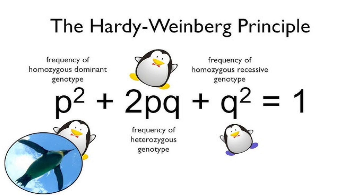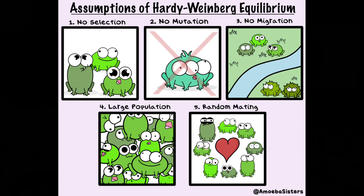p² represents individuals with two dominant alleles — that's homozygous dominant, or big A big A. The 2pq represents a dominant and a recessive allele next to each other — that's heterozygous, big A little a. And q² represents two recessive alleles — homozygous recessive, little a little a. The equation assumes the population is stable, not evolving, and that factors like natural selection, mutations, or migration are never affecting it.